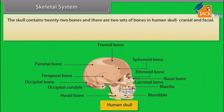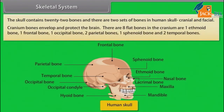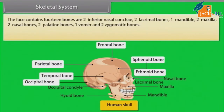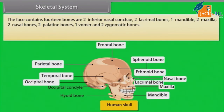Cranium bones envelop and protect the brain. There are 8 flat bones in the cranium: 1 ethmoid bone, 1 frontal bone, 1 occipital bone, 2 parietal bones, 1 sphenoid bone, and 2 temporal bones. The face contains 14 bones: 2 inferior nasal conchae, 2 lacrimal bones, 1 mandible, 2 maxilla, 2 nasal bones, 2 palatine bones, 1 vomer, and 2 zygomatic bones.